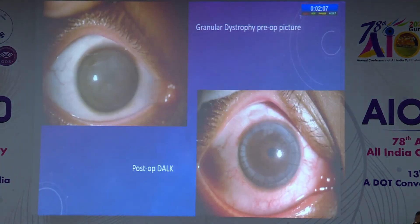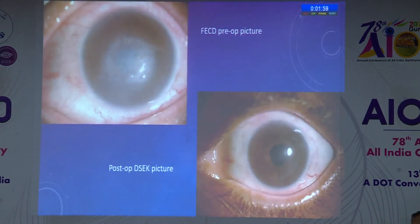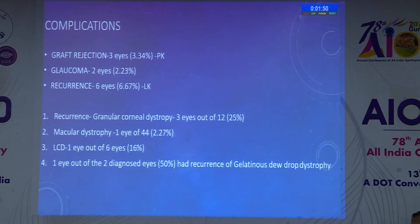This is a clinical picture of a patient with granular corneal dystrophy pre-operatively and then post-operatively two weeks after DALK. This is a pre-operative picture of a patient with Fuchs endothelial corneal dystrophy, and then post-operative DSAEK two weeks post-op.